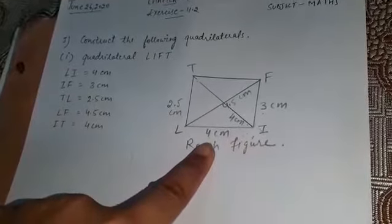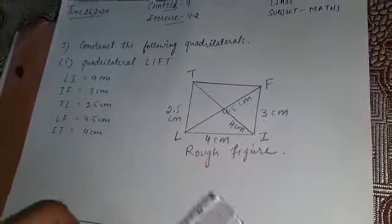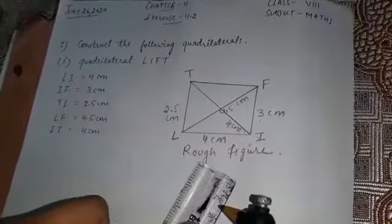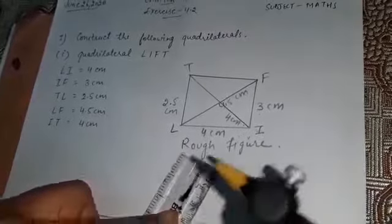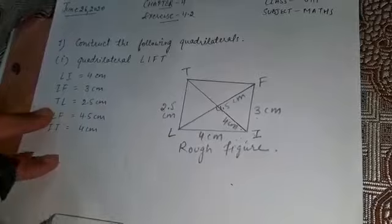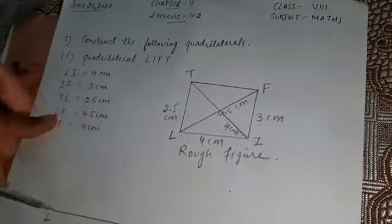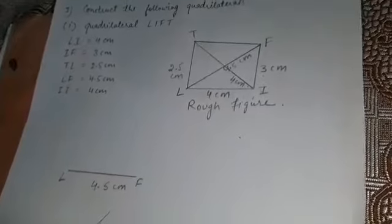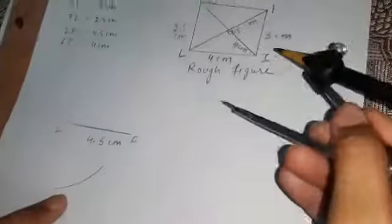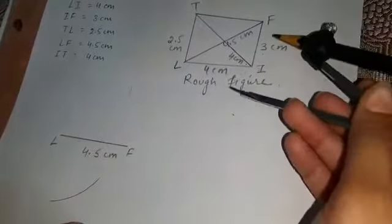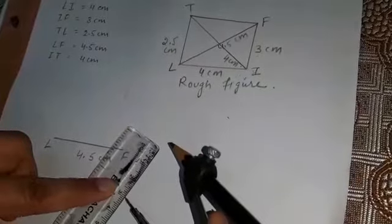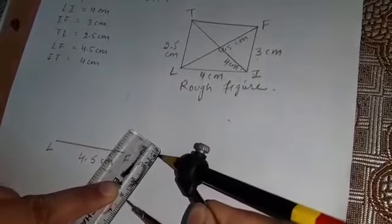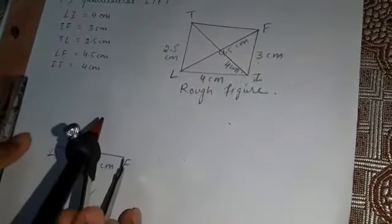From point L, I is 4 centimeters away, so open your compass to a radius of 4 centimeters. Measure it using a scale, then from point L draw an arc of 4 centimeters — I am taking it on the other side of LF. After that, from point F, the distance is 3 centimeters. Measure 3 centimeters using the scale — your compass radius should be 3 centimeters. Put it on point F and draw another arc.